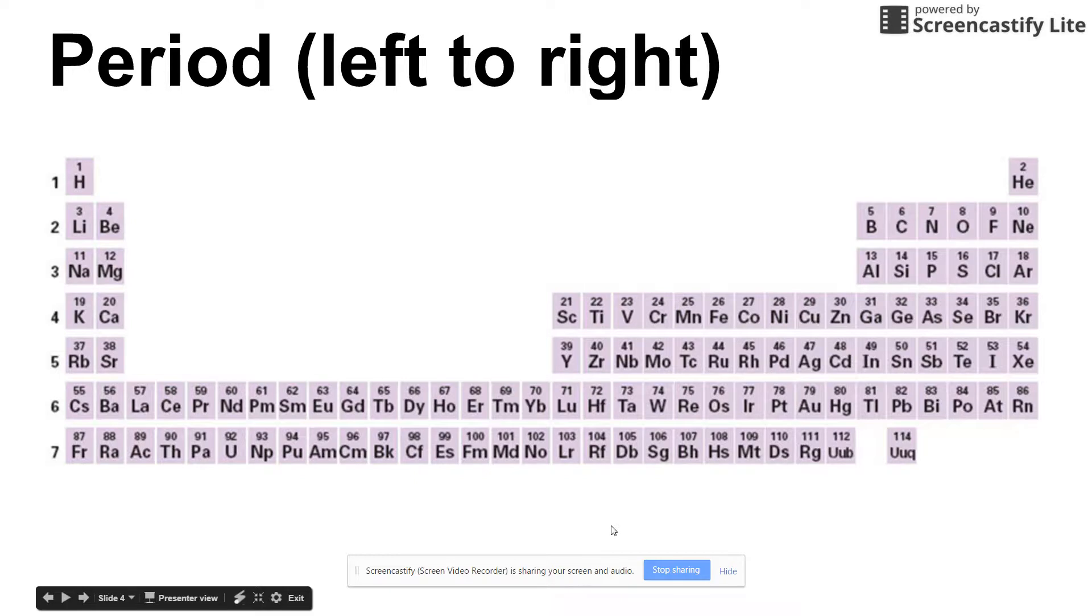Don't concern yourself with that because it doesn't affect how many periods there are. On your period, the first period contains only two elements, hydrogen and helium.